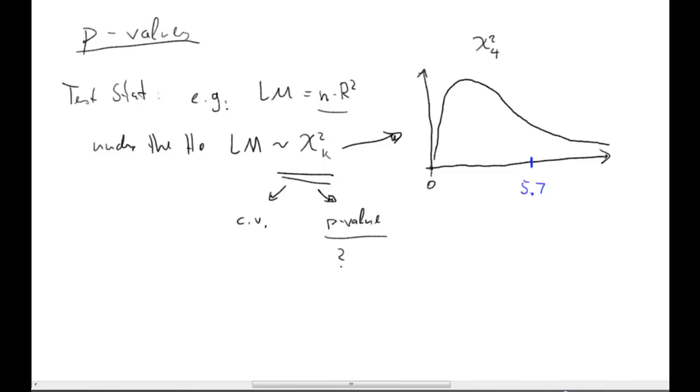Let us see. If we were to use a critical value, what would we do? We would find at, say, alpha equals 5%, that value in the distribution that cuts off 5% of the distribution on the right-hand side. And then we would compare our calculated test statistic, 5.7, against that critical value. And only if our test statistic is to the right of the critical value, we would reject the null hypothesis.